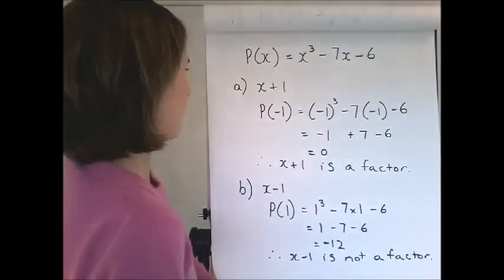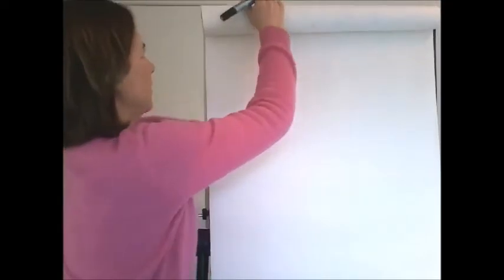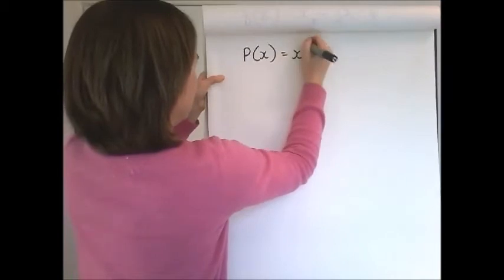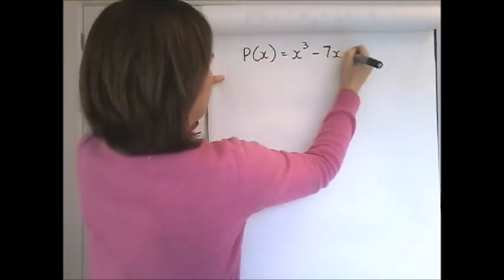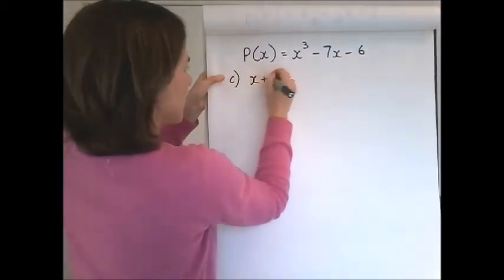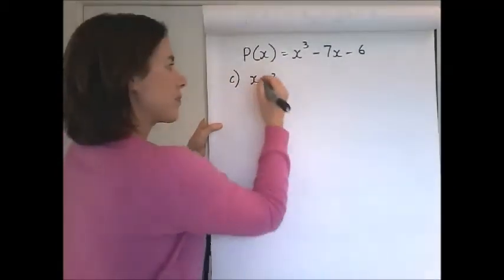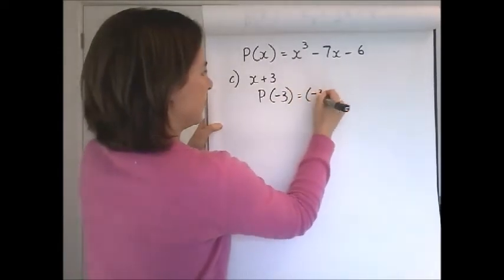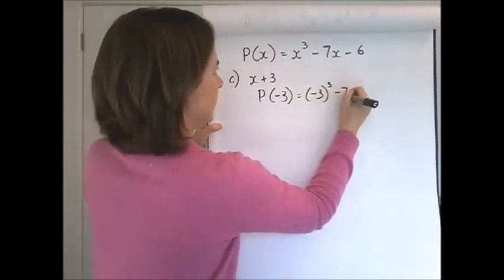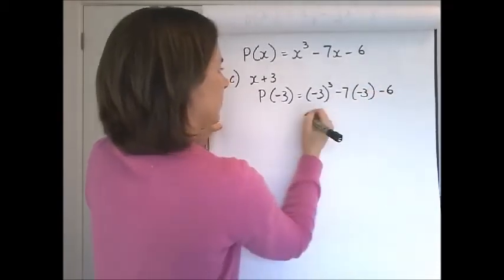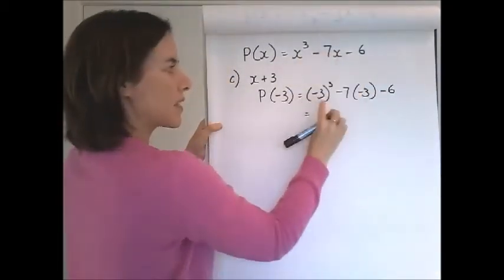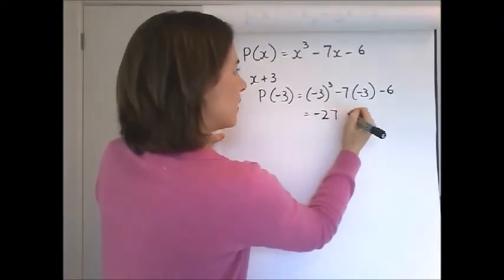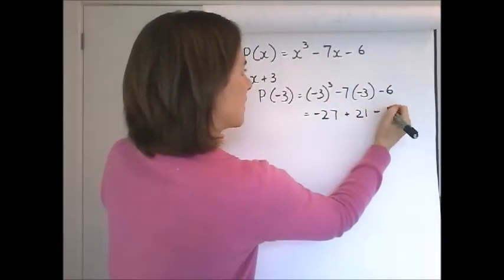So I'll do C was x plus 3. To test this, I substitute negative 3. So replace each x with negative 3, work it out: negative 27 plus 21 take 6.